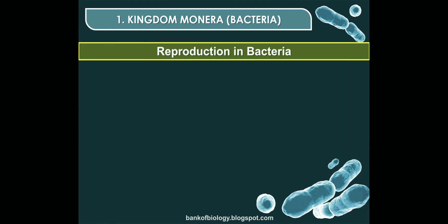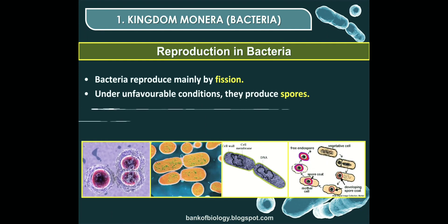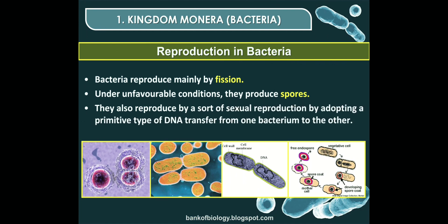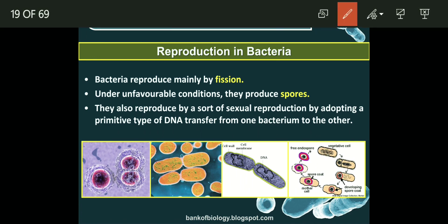In kingdom Monera, bacteria reproduce mainly by fission — when one cell divides into two cells. Under unfavorable conditions, some bacteria produce spores. Some bacteria also reproduce by a primitive type of sexual reproduction involving DNA transfer from one bacterium to another.